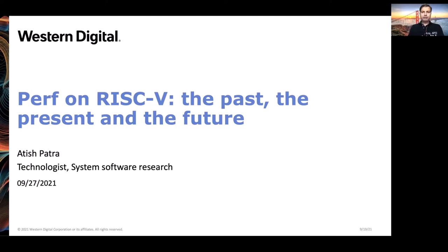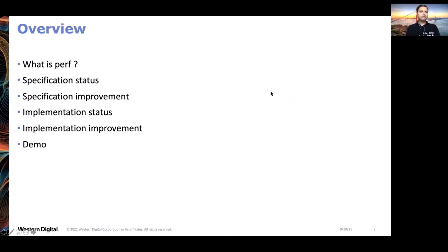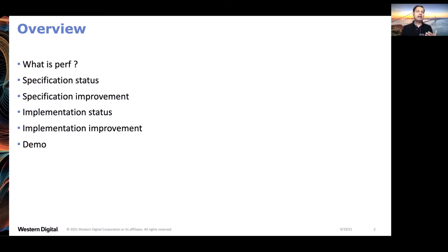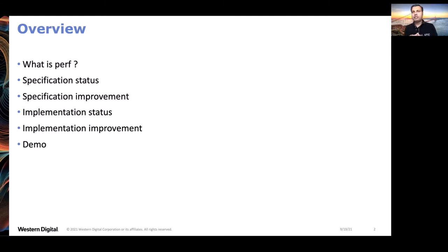Here is a brief overview of today's talk. First we will start with a brief introduction of PERF, then we will move to the RISC-V specifications that are required for PERF and what improvements have happened recently with those specifications. Second, we move to the implementation part - what is the status of the implementation of those specifications. At the end I will show you a demo of PERF running in QEMU live.